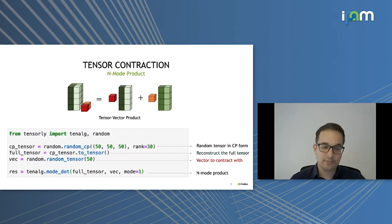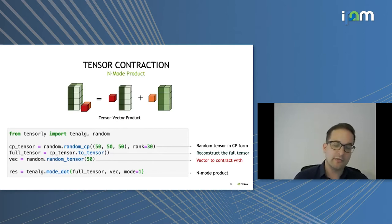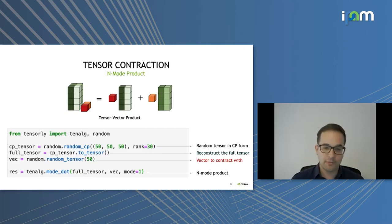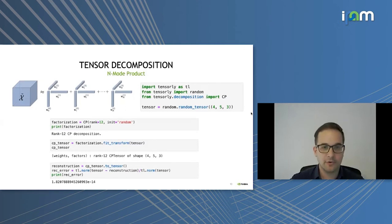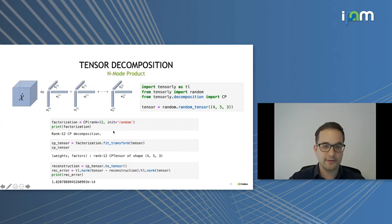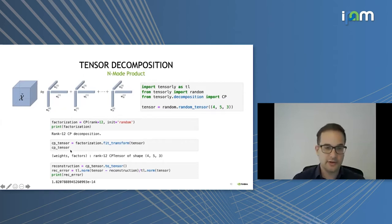TensorLy gives an easy and flexible interface to tensor methods: you can form tensors in decomposed form, reconstruct the full tensor, do n-mode products and other operations. When you have a tensor you can easily apply a tensor decomposition with a scikit-learn-like API. For example, you can create a random tensor of size 4×5×3, create an instance of a CP decomposition of rank 12, and simply fit that decomposition to your tensor — with the reconstruction error being very small.